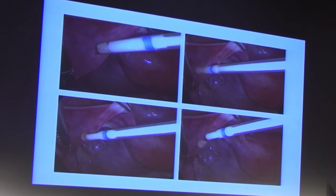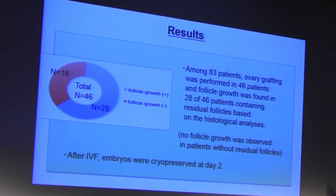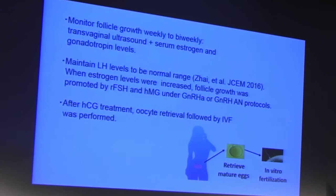After grafting, we monitor follicular growth weekly to biweekly by transvaginal ultrasound and measure serum estrogen and gonadotropin levels. The most important tip is to maintain LH levels in the normal range using estrogen supplementation and a GnRH agonist. When estrogen levels increase, follicular growth is promoted by recombinant FSH and/or HMG using antagonist protocols. Finally, after HCG trigger, oocyte retrieval followed by IVF is performed.